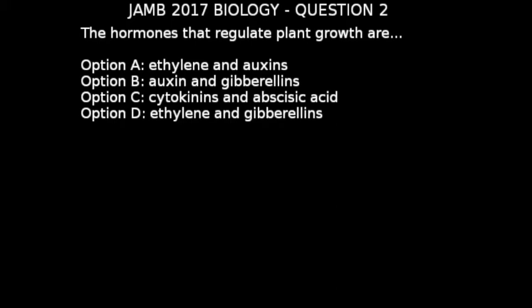Option C is also not correct because while cytokinin is a plant growth hormone, abscisic acid is not — abscisic acid is actually involved in the shedding of leaves.